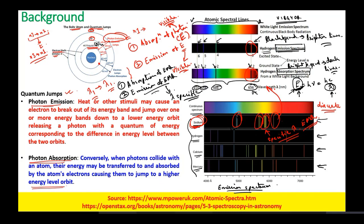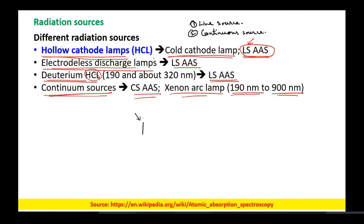If you want to excite a sodium sample — to find out whether there is any sodium element — you will generate light of the sodium metal, which generates specific wavelength light that can be used to stimulate only and only the sodium ions. This is what hollow cathode lamps do — they generate specific wavelength electromagnetic radiations capable of exciting the target samples.